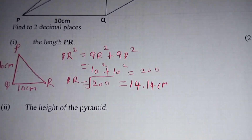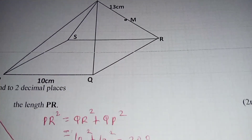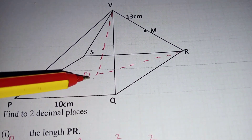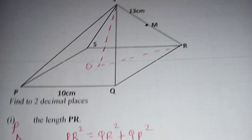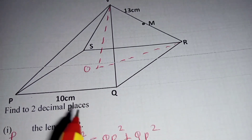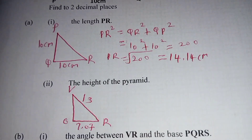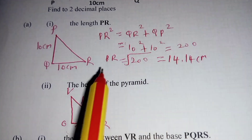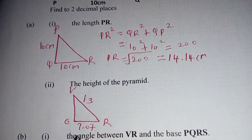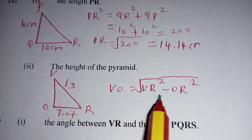Next we find the height of the pyramid. The triangle is right-angled at the center O. From the diagram, VR is 13, and OR is half of PR. PR is 14.14, so half of that is 7.07. By the Pythagorean theorem again, we can get VO from VR squared minus OR squared.